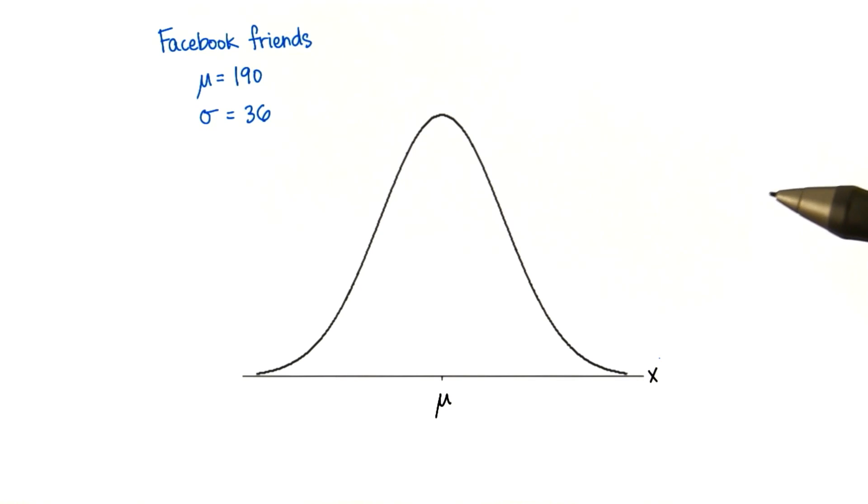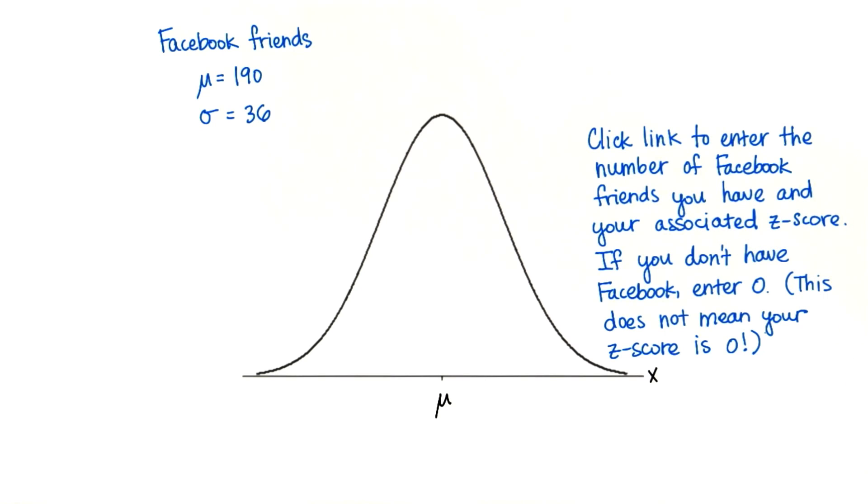Do your best when you calculate your z-score, because it's good practice and we're going to use z-scores the rest of the class. If you don't have Facebook, just enter 0. But be careful—this does not mean your z-score is going to be 0. You'll have to calculate that and figure out what it is. And I will know if you didn't calculate it correctly.